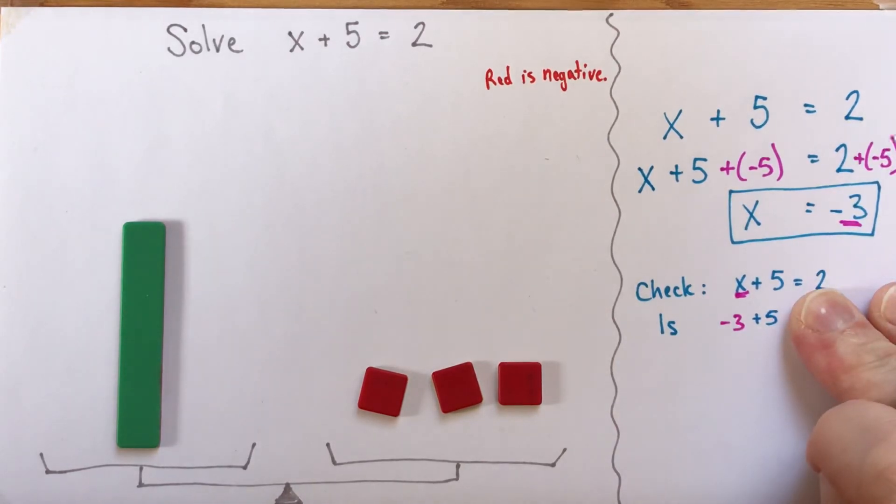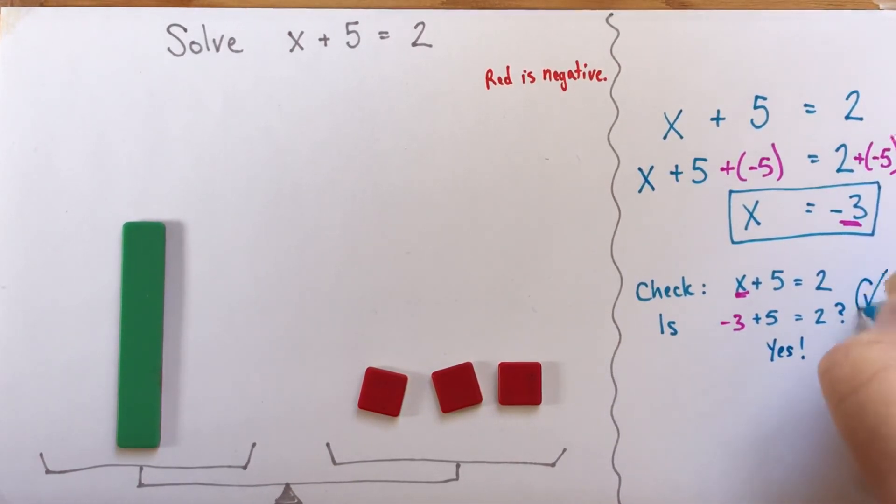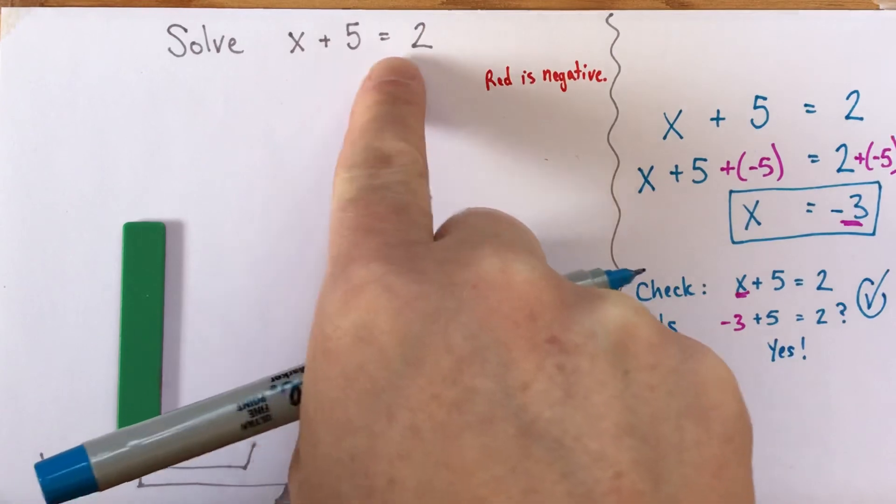So negative 3 plus 5, I can think of that. I can imagine the zero pairs, or I can imagine a number line, or whatever I'd like there. Negative 3 plus 5 is indeed equal to 2. Yes, it is. So that means that x equals negative 3 is the solution to the equation x plus 5 equals 2.